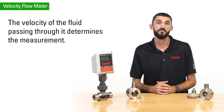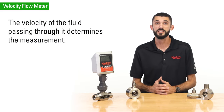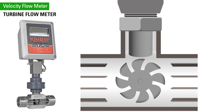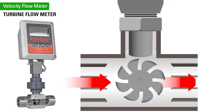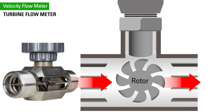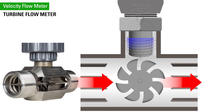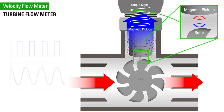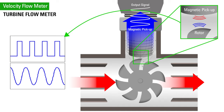The next type of flow meter we'll talk about is a velocity meter. With this type of meter, the velocity of the fluid passing through it determines the measurement. The most common velocity meter is a turbine flow meter, which calculates flow based on the fluid flowing through a free-spinning rotor. Each revolution of the rotor is read by the magnetic pickup and corresponds to a specific volume of gas or liquid.